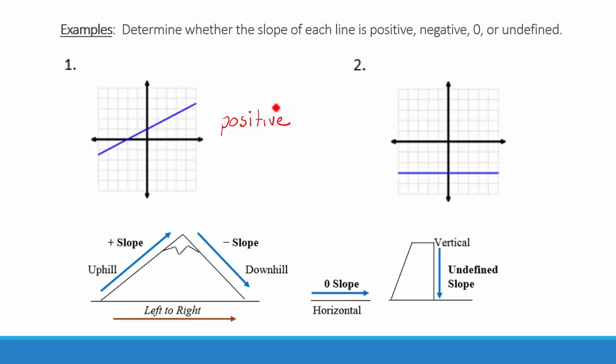For number two, we have a perfectly horizontal line. A perfectly horizontal line has a slope of zero.